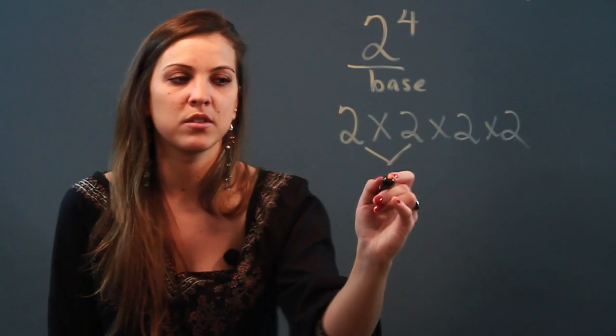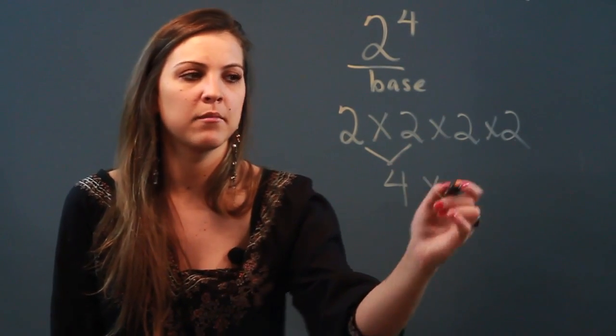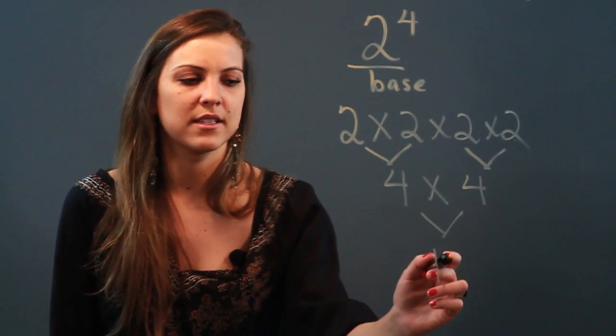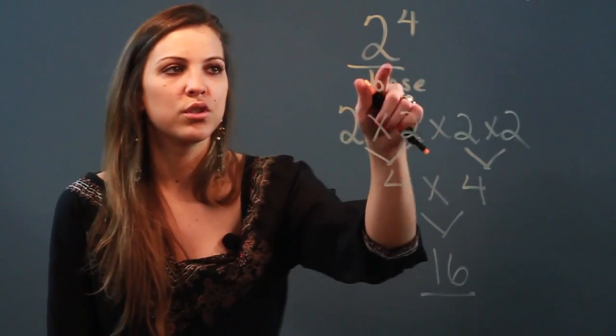I'm going to multiply: 2 times 2 is 4, and another pair—2 times 2 is 4. Keep simplifying: 4 times 4 is 16. So 2 to the fourth power is equal to 16.